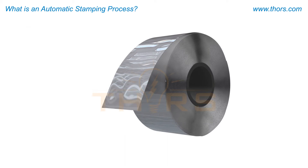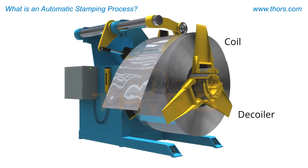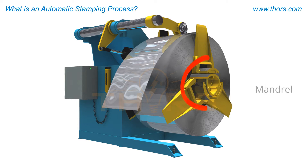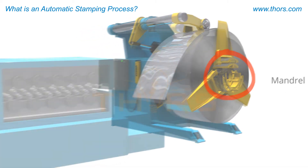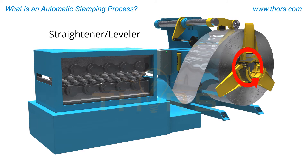The process begins when a coil is loaded onto a decoiler. This example is called a reel-type decoiler. The mandrel expands and holds the coil on its inside diameter. The coil rotates to unwind the material strip into the straightener.